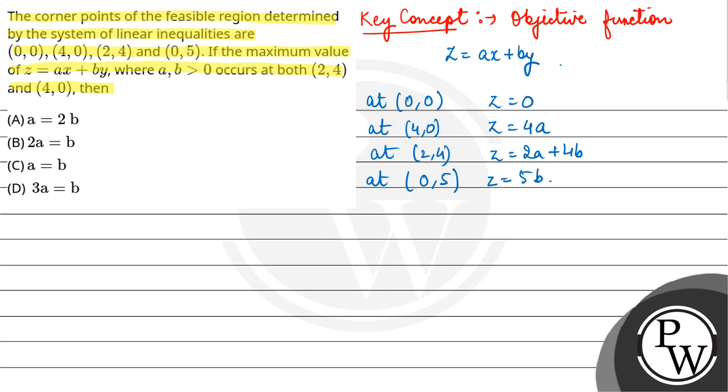So your question given is the maximum value occurs at (2,4) and (4,0). So that means at (4,0), Z value is 4A, and at (2,4), Z value is 2A plus 4B. So 4A is equal to 2A plus 4B, therefore 2A is equal to 4B, A is equal to 2B.